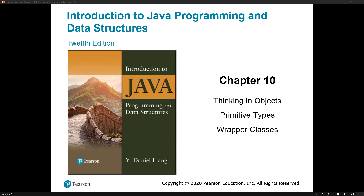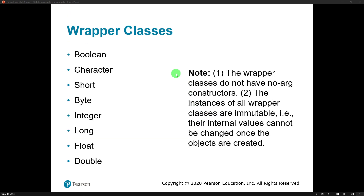In this video we are going to talk about wrapper classes. Wrapper classes are something provided for working with our primitive types. What were our primitive types in Java? They are the types that are not made from classes — they are built-in types. We have booleans, characters, shorts, bytes, integers, longs, floats, and doubles. Notice that String is not in there. In Java, these are not objects — they are primitive types.